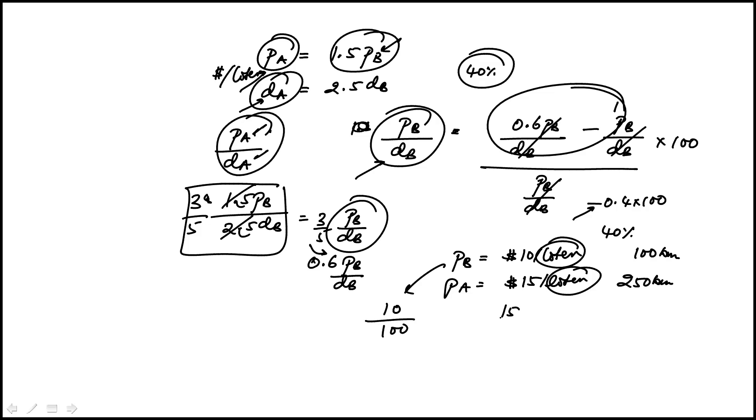But the cost per liter would be, in case of B, would be 10 over 100. Here would be 15 over 250. And then we can just simplify - this is 1/10, 3/50. We're just looking at how much less this quantity is than that.